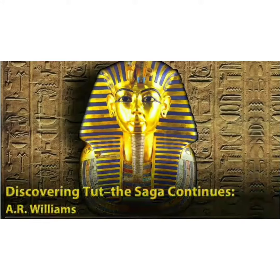Dear students, today we will be reading a lesson that is 'Discovering Tut: The Saga Continues.' Saga here means a long story of heroic achievement, written by A.R. Williams. This chapter is regarding the last heir of the great dynasty, that is Tutankhamun. Heir here means the heritor or the successor.